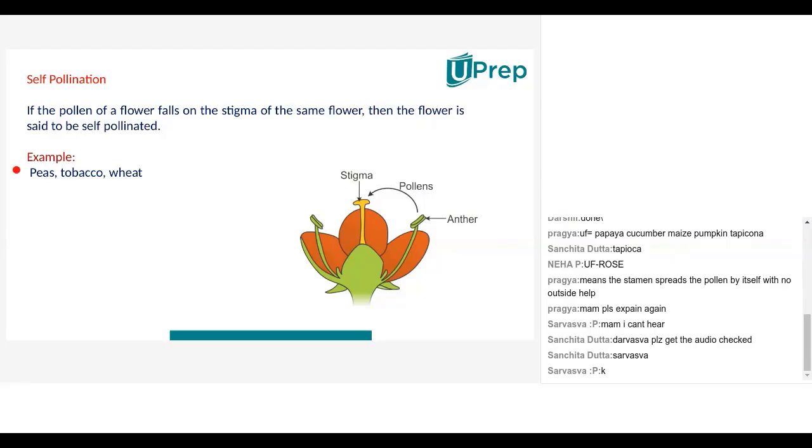So examples of self-pollination is peas, green peas that you have - mutter, tobacco and wheat. These are all examples of self-pollination.